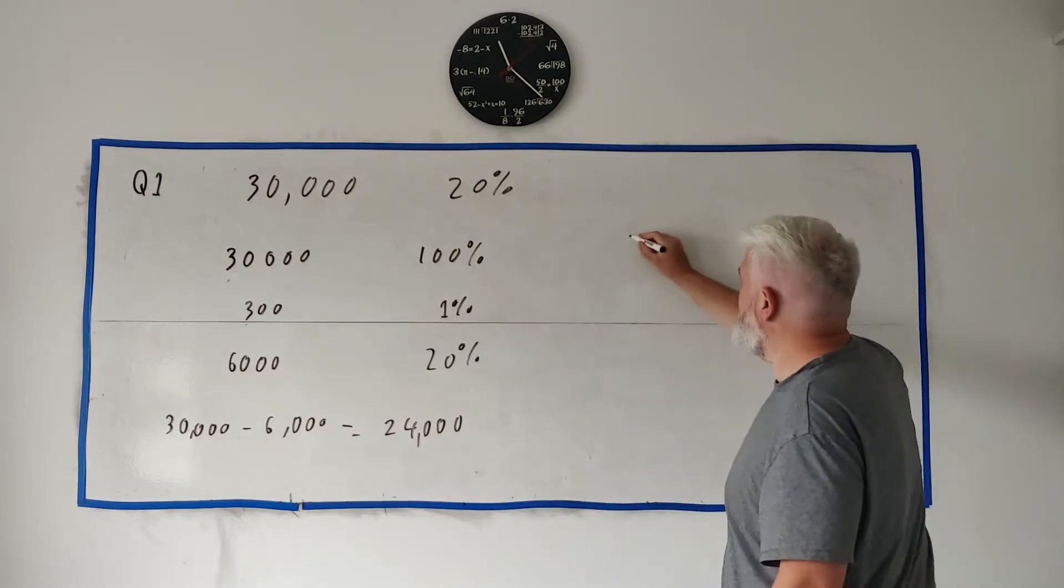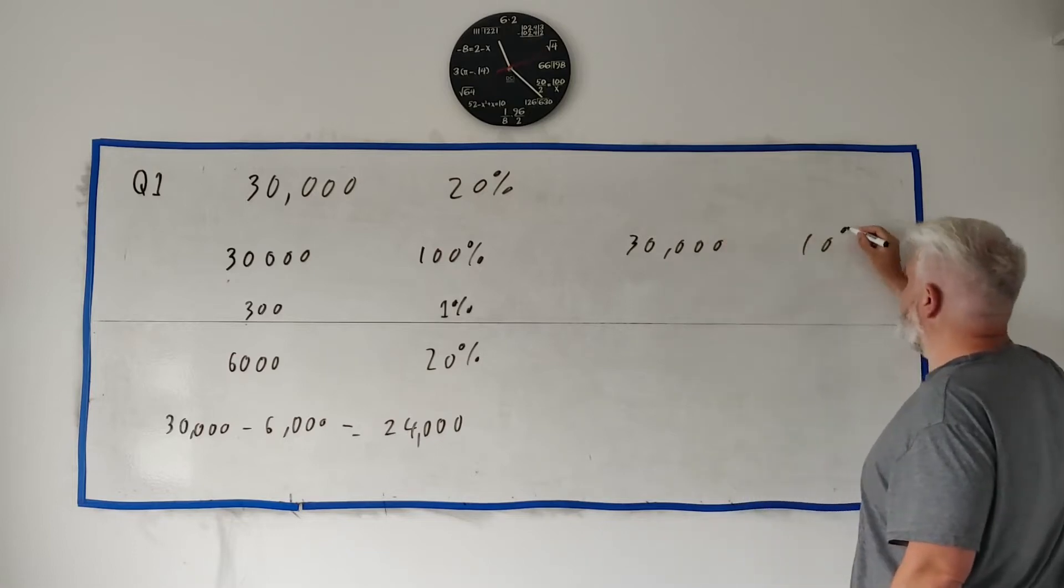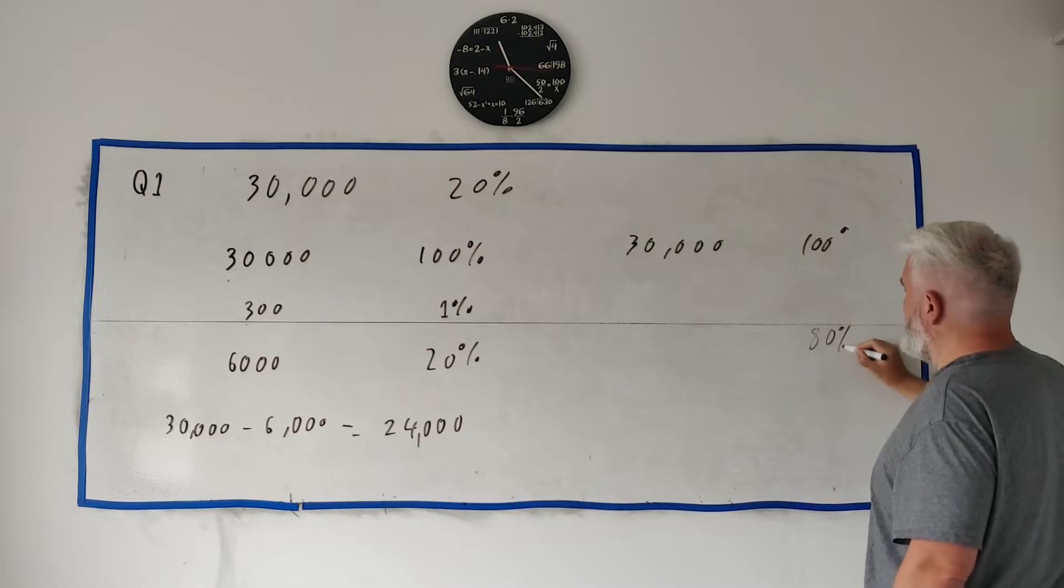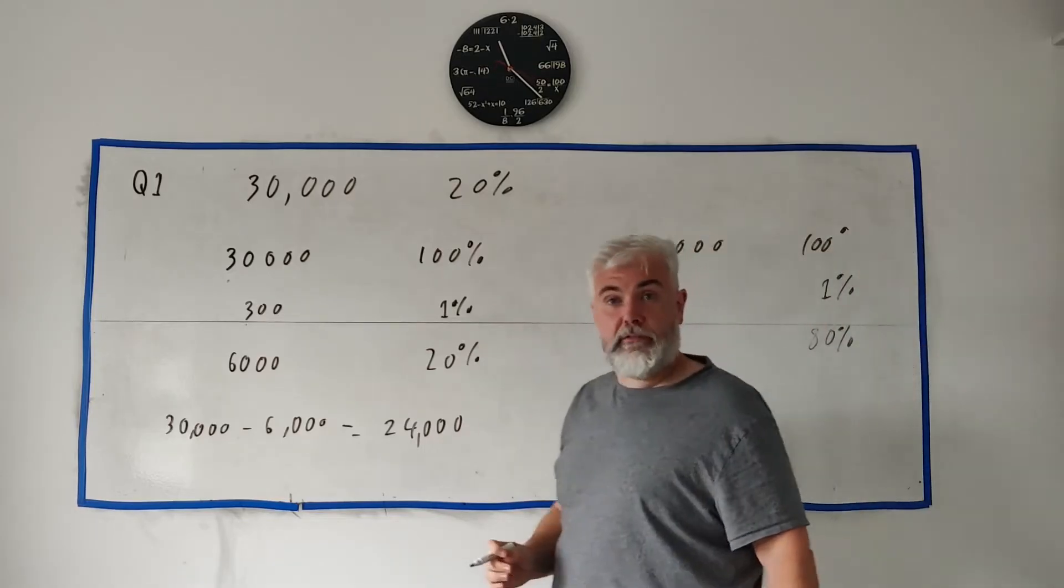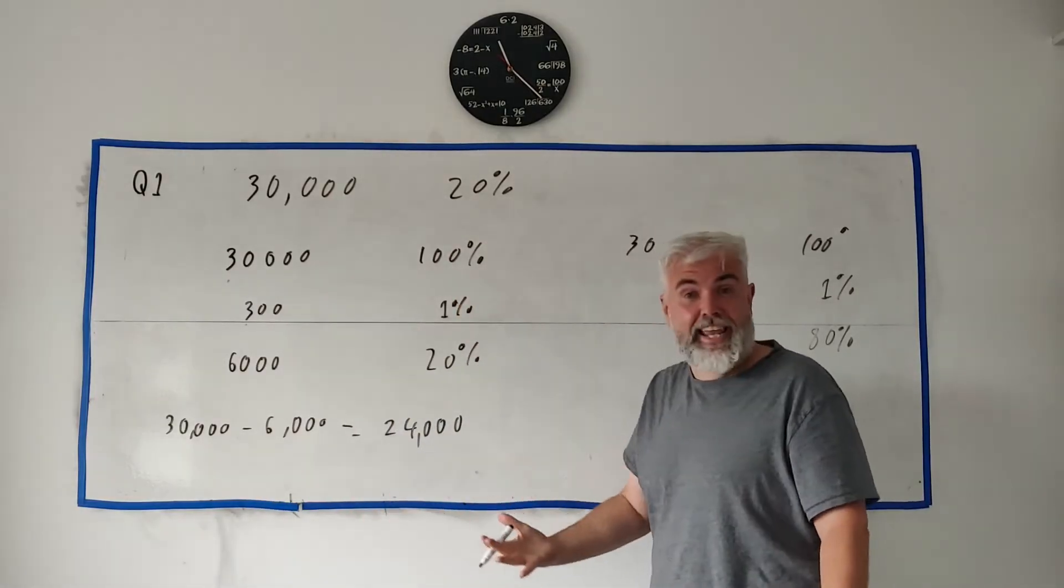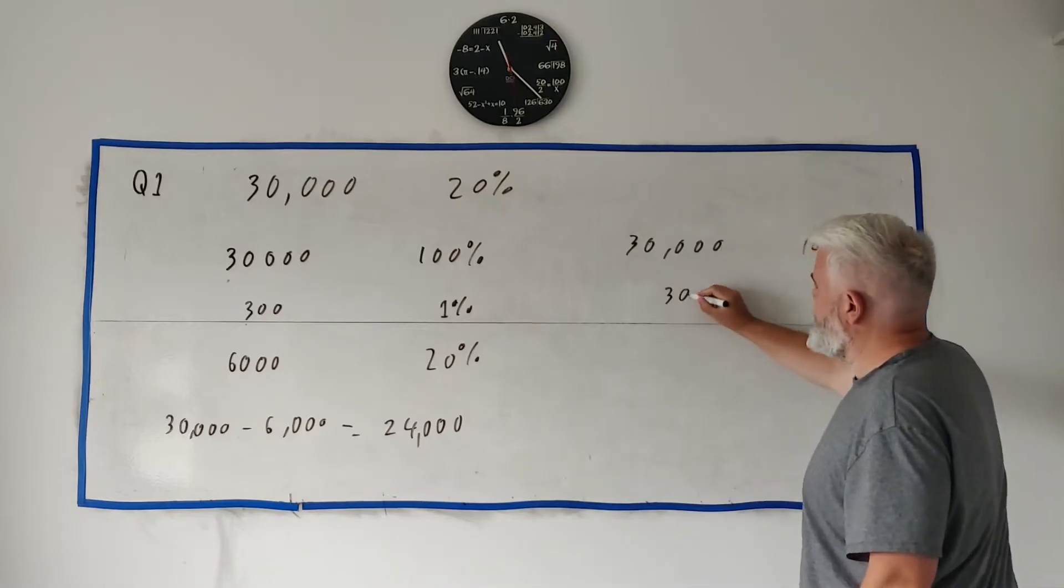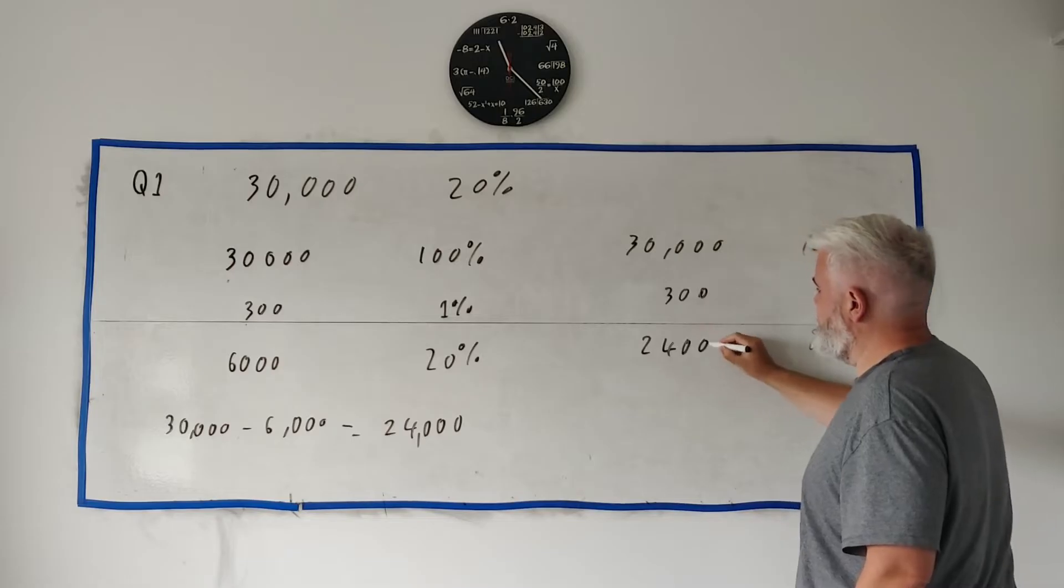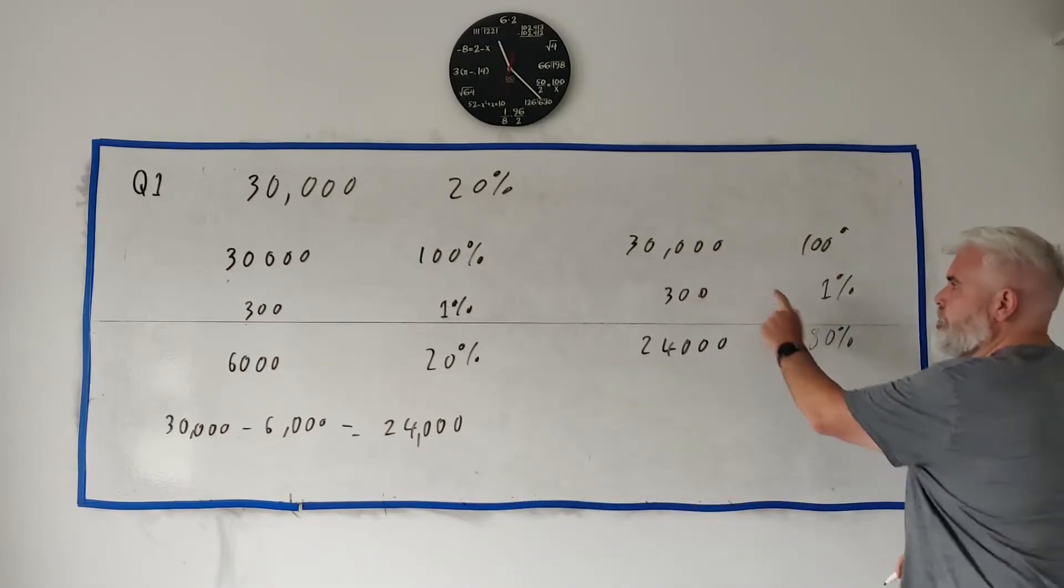I'm going to do it again instead of doing this way. What you probably could have done is started at 100 percent and got to 80 percent because they weren't asking for 20% they were asking for 20% off. 20% off 100 is 80 so you could have just gone straight to 80, we get 300, multiply by 80 we'd get 24,000 much quicker.